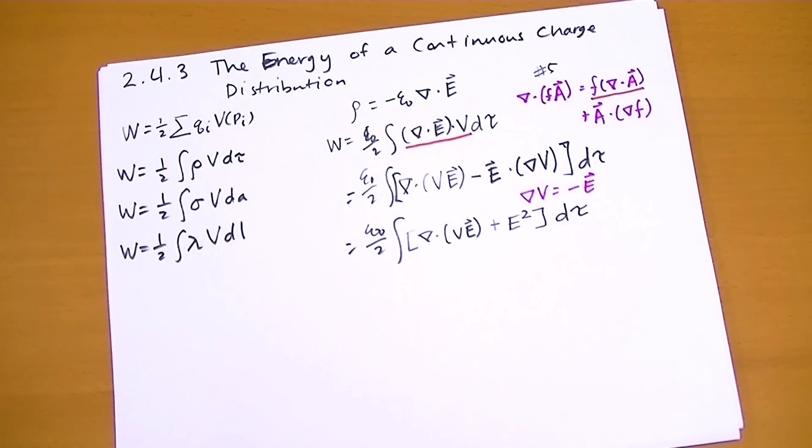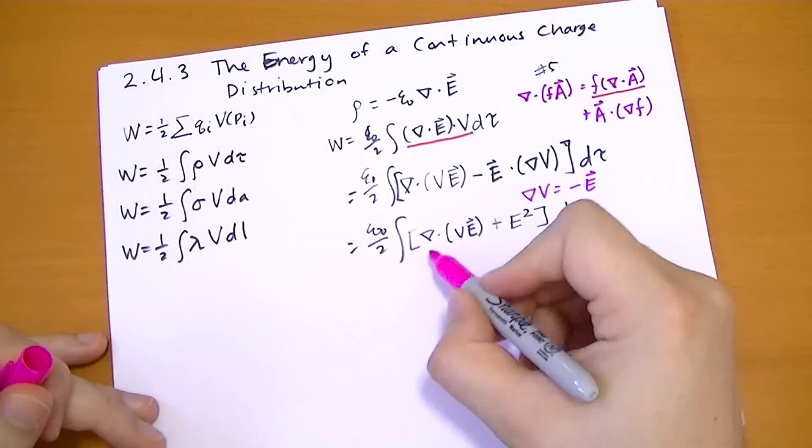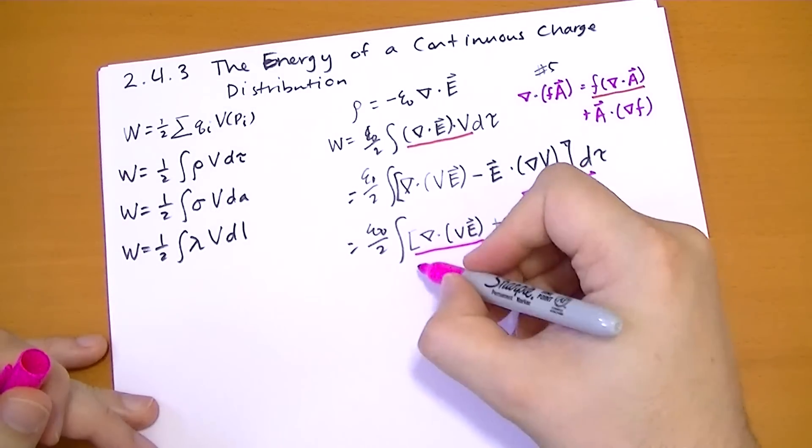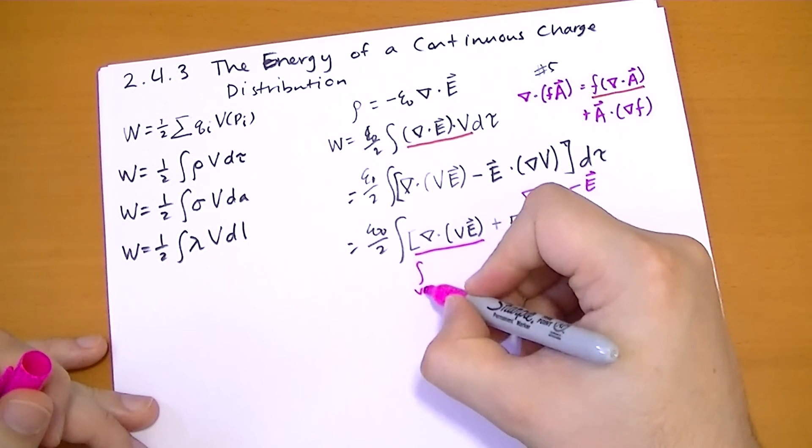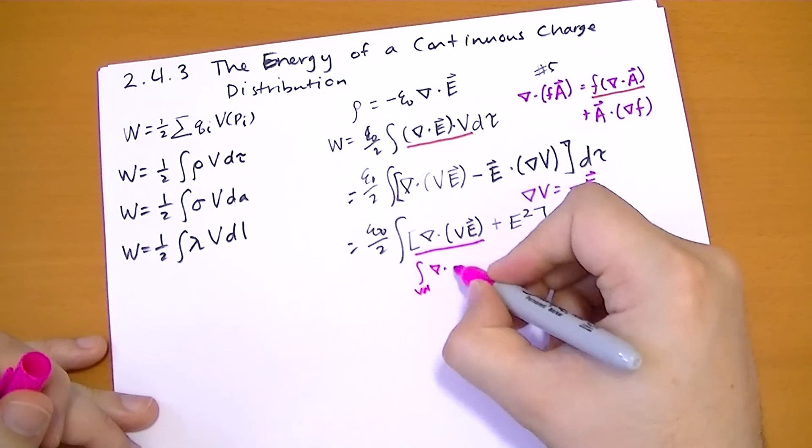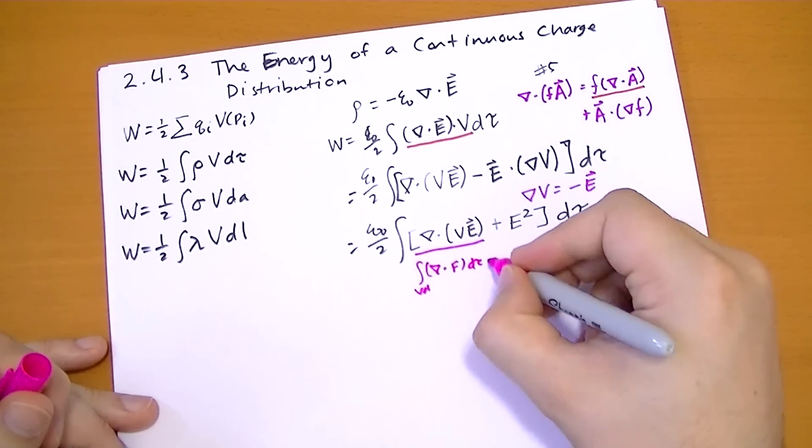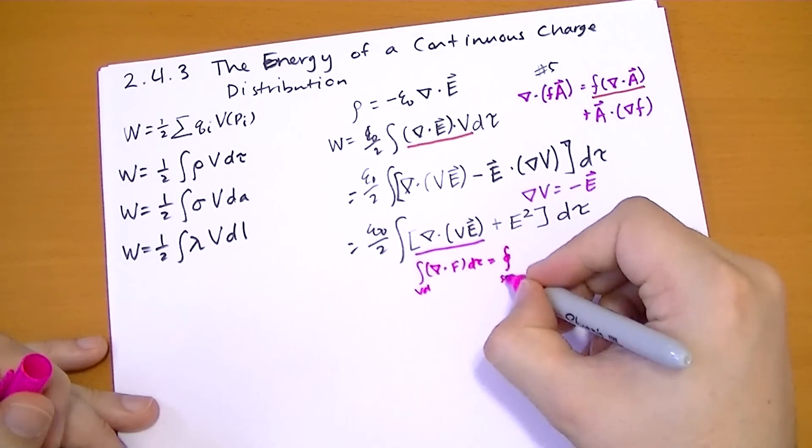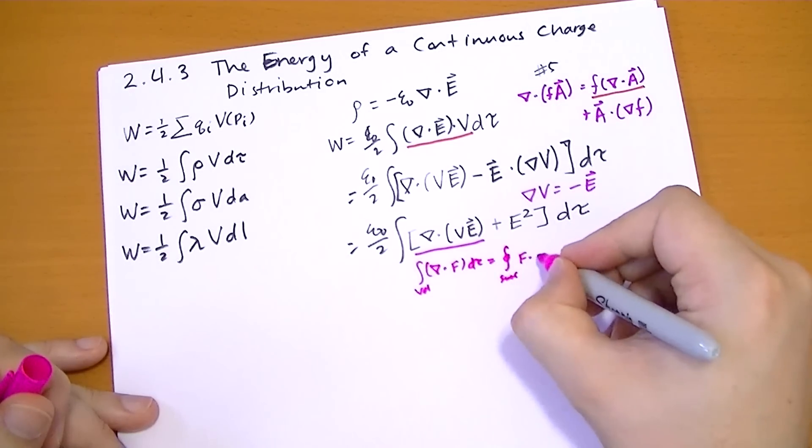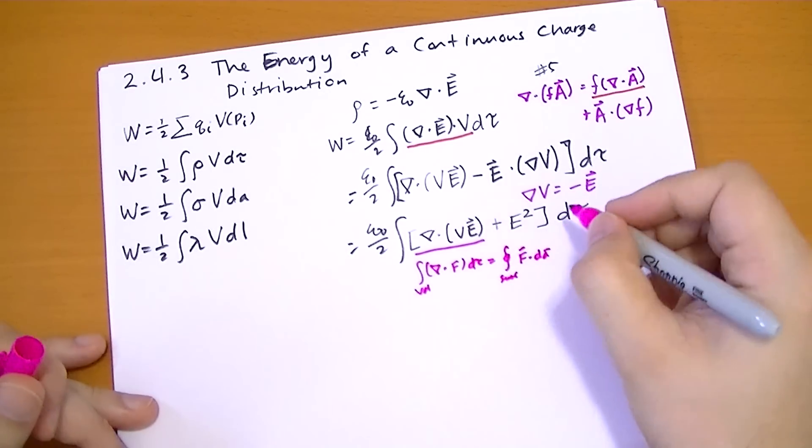If we apply Gauss's theorem, or the divergence theorem, to this guy, this part right here. So the volume integral of the divergence of some field, which is a scalar, times the volume, is equal to the surface integral of that field dot the flux.